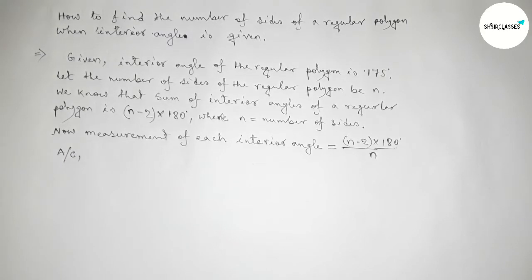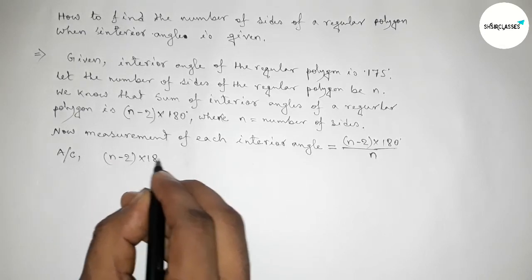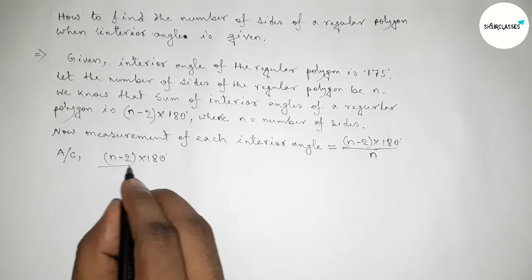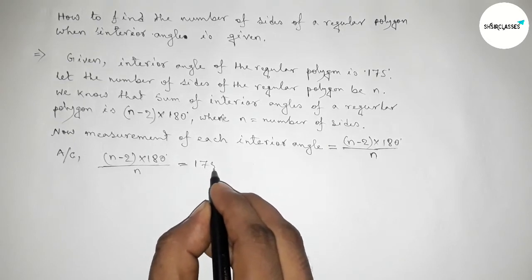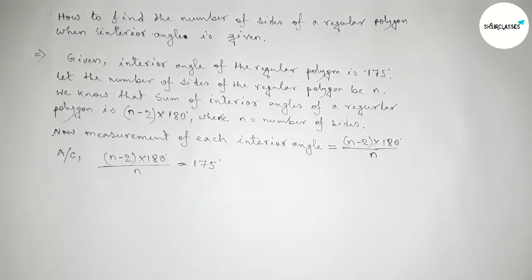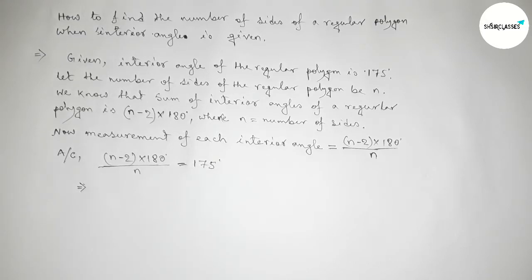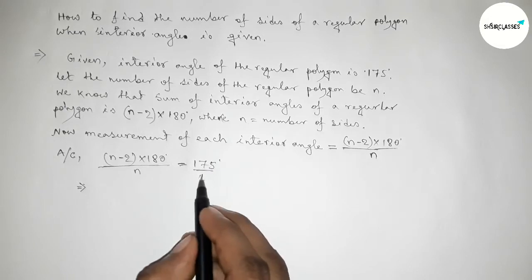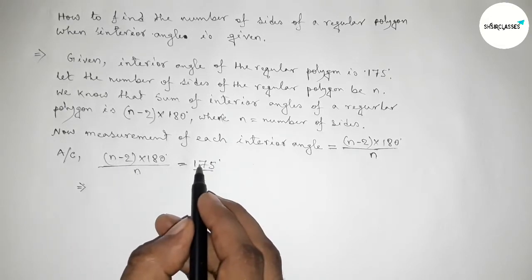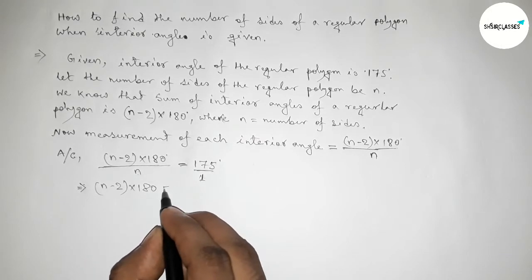So according to the condition, (n - 2) × 180 divided by n equals 175 degrees. Next we have to solve this problem. We can write here 1 over n, so next we have to cross multiply.